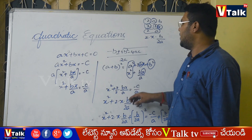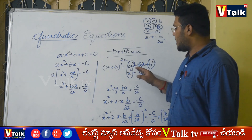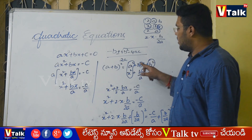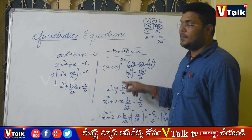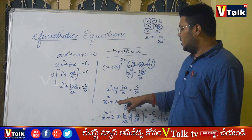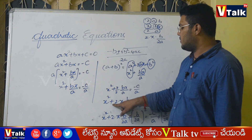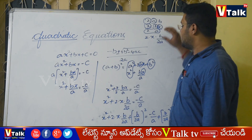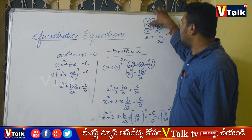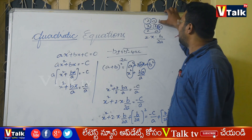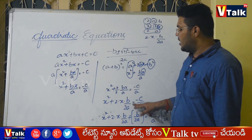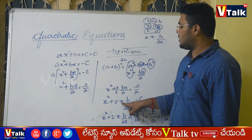Since a squared corresponds to x squared, a equals x. For the 2ab term we need 2 and b. Since we need a 2, we multiply the equation by 2 by 2. This keeps the equation the same. After writing it: x squared plus 2 into x into b by 2a equal to minus c by a.